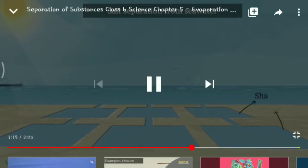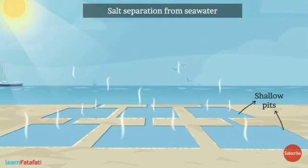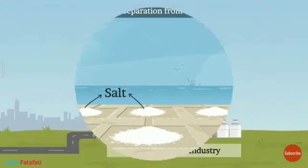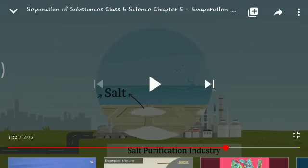A common example of evaporation is salt being separated from seawater. Here you can see shallow pits have been made — due to the sun's rays, the water gets evaporated. When the water evaporates, the leftover part is the salt. Let me show you once more so it will be easier for you.